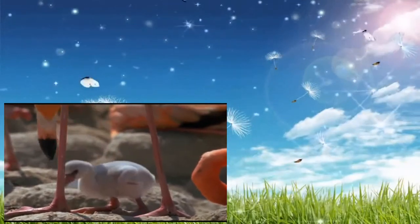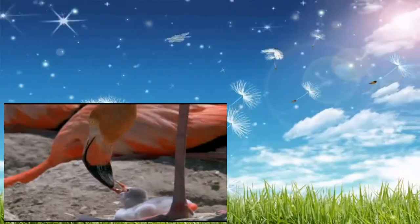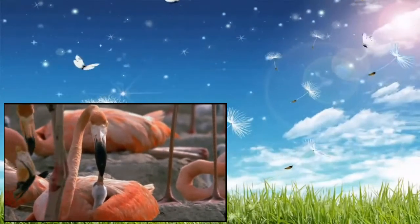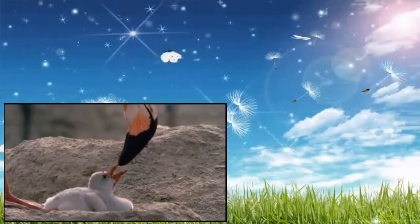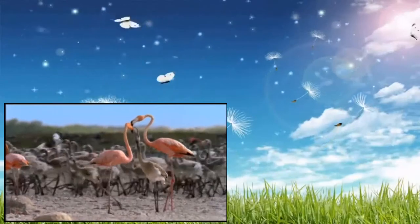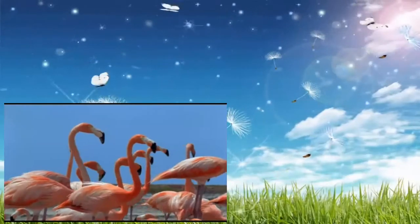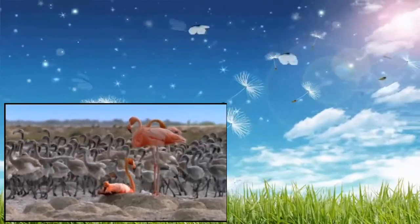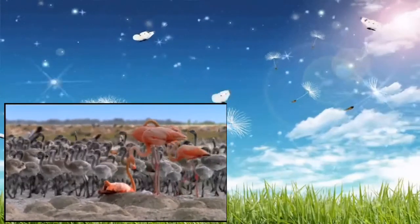Once the chicks hatch, they feed on a rich, brine shrimp soup regurgitated by their parents. At around a month old, the chicks begin to strut their stuff together in a crèche. In another few weeks, they'll be old enough to fly. They'll leave this salty nursery to feed in South America until they themselves return to breed.